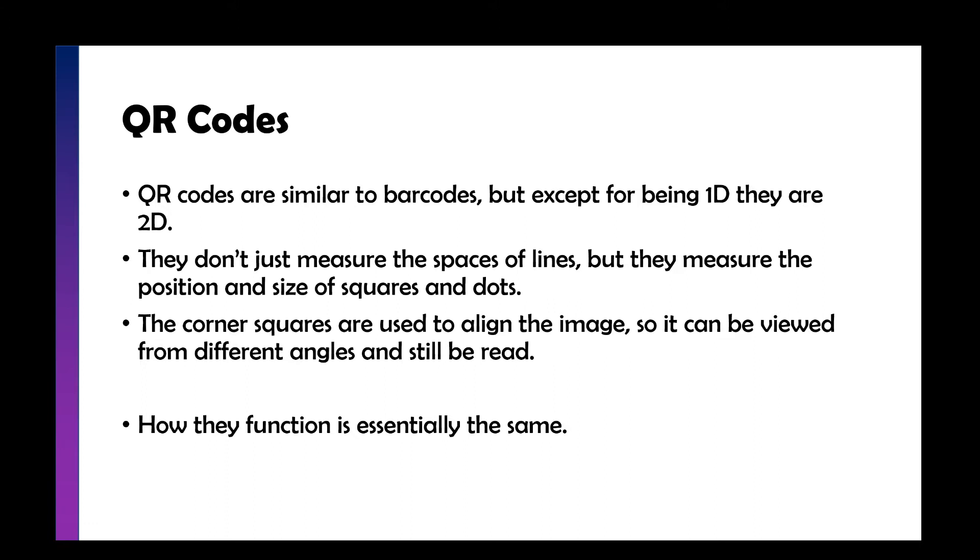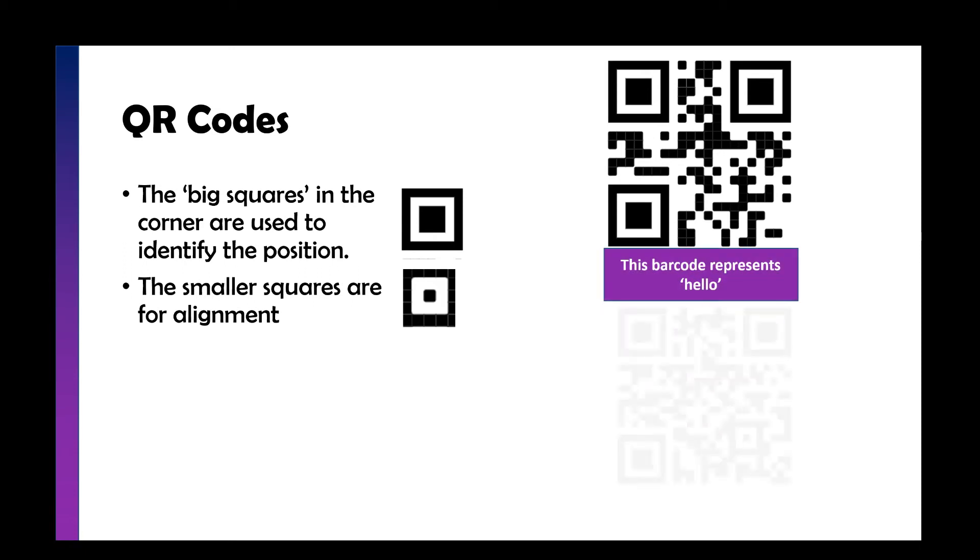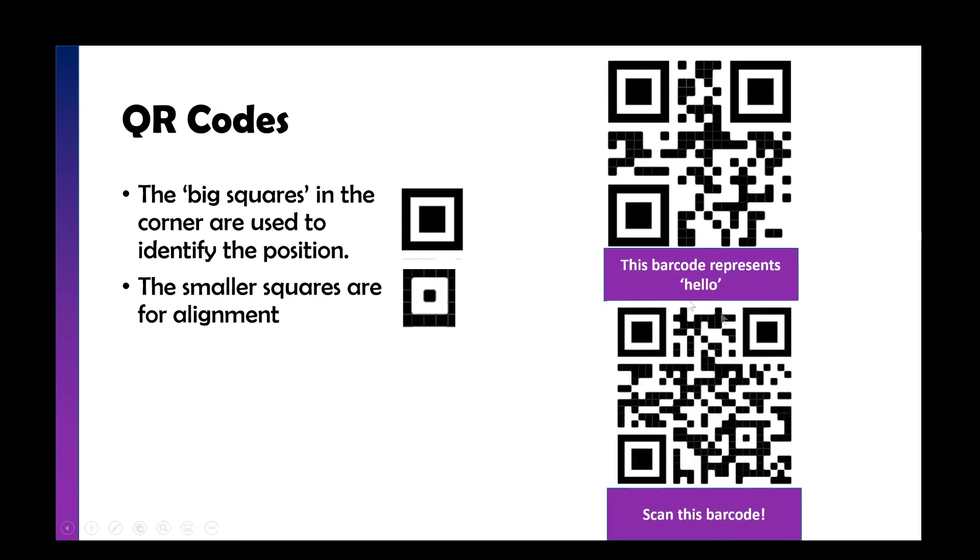But it still works with shining a light or taking a photograph and looking at the black areas and the white areas. So the big squares identify the position and the smaller squares are for alignment. That's what aligns the image, which is what allows you to take a photo on a bit of an angle. That's why lots of posters and some even street arts and graffiti use QR codes that they painted themselves to spread an idea or an advert. So these two QR codes have been generated. By all means, pause the video, scan them both, see what you think. It should take you to a website nice and easily.